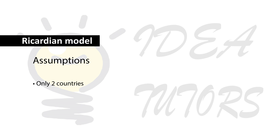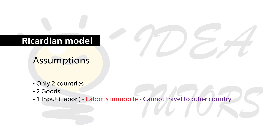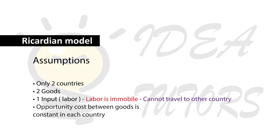There are only two countries and they produce two goods. Production requires only one input — labor — which is limited in amount in both countries and is perfectly immobile, meaning labor cannot travel across countries. The opportunity cost between the goods is constant in each country, which means the production possibility curve is a straight line.